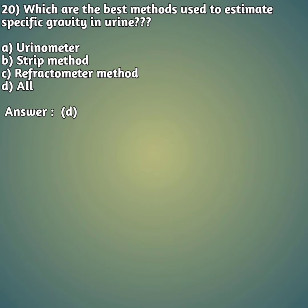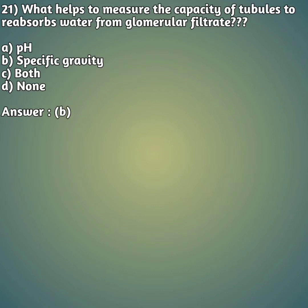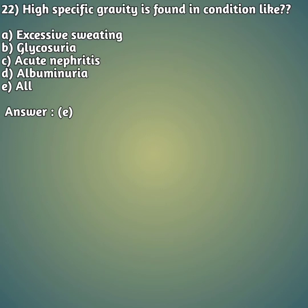Question 21: What helps to measure the capacity of tubules to reabsorb water from glomerular filtrate? Option A: pH, option B: specific gravity, option C: both, option D: none. The right answer is option B, specific gravity.